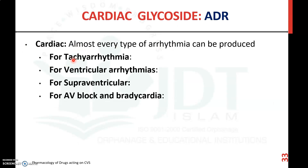Cardiac adverse reactions include all types of arrhythmia due to the action of cardiac glycosides, such as tachyarrhythmia, ventricular arrhythmia, supraventricular arrhythmia, atrial fibrillation, AV block, and bradycardia. These are the different arrhythmias produced as adverse effects of cardiac glycosides.